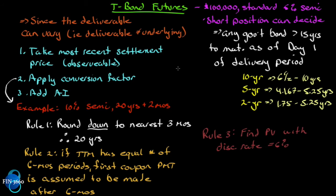T-bond futures are a little different than the other futures contracts we've talked about, in that the specification of the underlying is not fixed. Here's what an underlying should look like, and you can have anything that's kind of close to that. The delivery is for a $100,000 six percent semi-annual coupon bond — a standard six percent semi-annual government bond — that's the underlying of the T-bond futures.